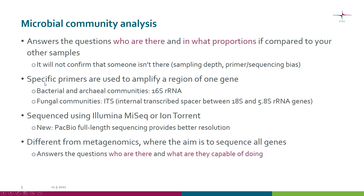The way this is usually done is we use specific primers to amplify a region of one gene. Different types of genes can be used depending on what you are studying. The very common one is the 16S ribosomal RNA gene. For fungal analysis you would use the ITS, or internal transcribed spacer, between these genes. Typically the sequencing is done using the Illumina MiSeq platform or IonTorrent. Nowadays it's also possible to use PacBio to obtain full-length sequences rather than just pieces of the gene, which gives better resolution.